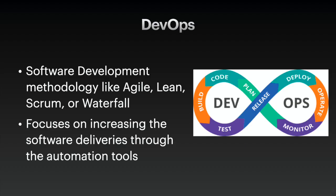Let's have a little discussion about what DevOps is before jumping into DevOps Pipeline. DevOps by itself is a software development methodology and it is not tied to any specific tool. You can think of DevOps like any other software development process, like Agile, Lean, Scrum, or Waterfall, except DevOps mainly focuses on increasing software deliveries through automation tools.